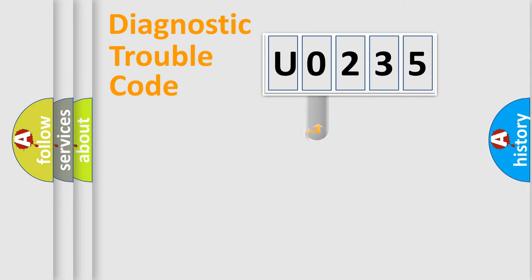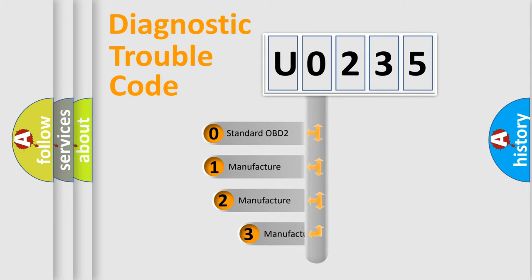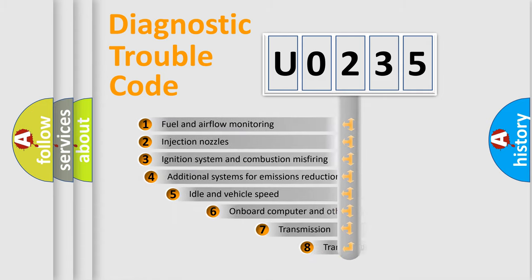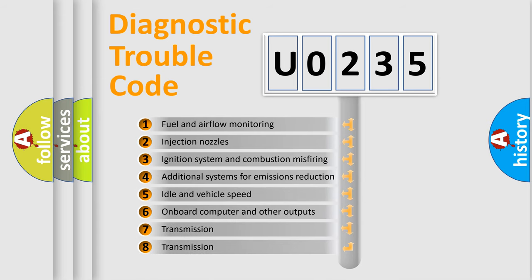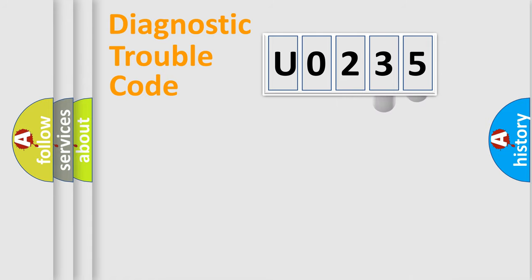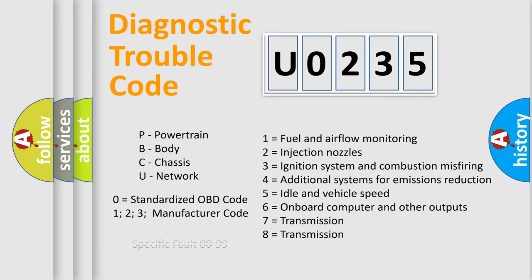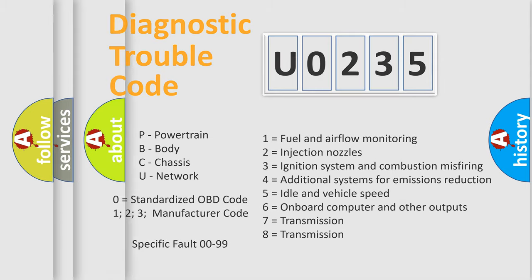This distribution is defined in the first character of the code. If the second character is expressed as zero, it is a standardized error. In the case of numbers 1, 2, or 3, it is a more manufacturer-specific expression of a car-specific error. The third character specifies a subset of errors. The distribution shown is valid only for the standardized DTC code. Only the last two characters define the specific fault of the group. Such a division is valid only if the second character code is expressed by the number zero.